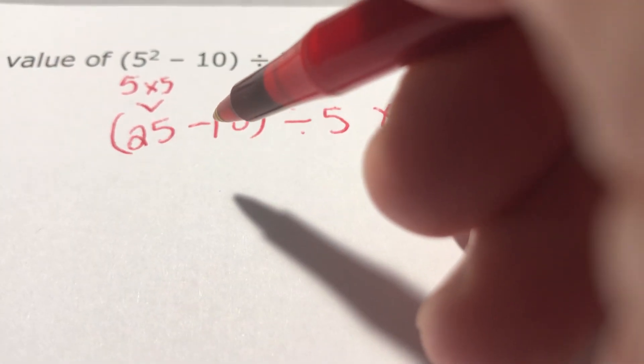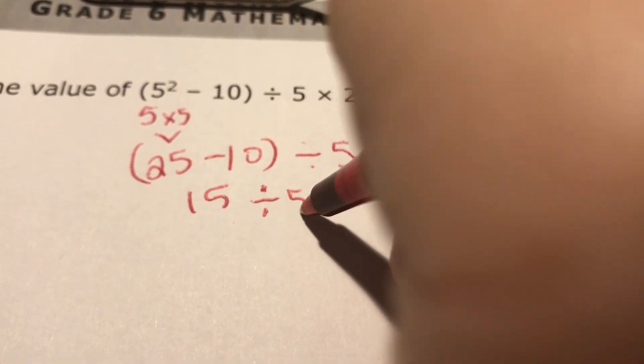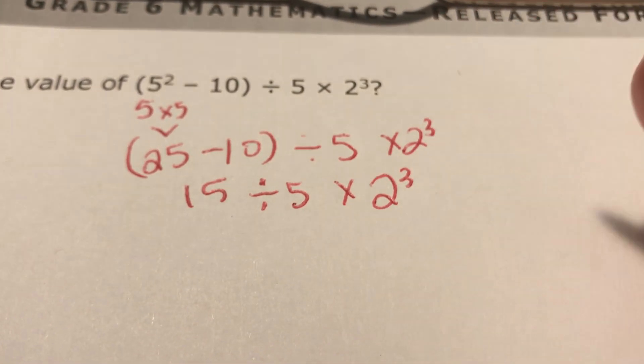So now we're still inside the parentheses, we've got to do 25 minus 10, which is 15. And we no longer need parentheses. You write divided by 5 times 2 to the 3rd power.